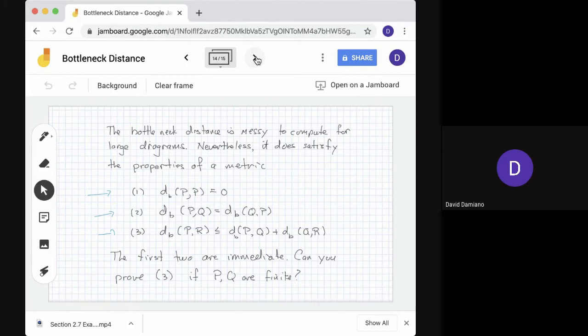Okay. In the next session, we'll consider the connection between d_B and continuity of the persistence construction. That's rather more involved and it needs a particular example to illustrate it. One last question. Based on the photos on the first page, why is this called the bottleneck distance? That's the end of this session. Thank you.